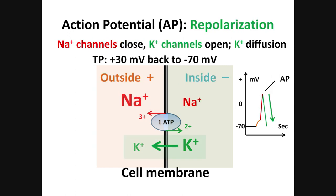When potassium channels open, where does the potassium go? It leaves the cell going from high level to low by diffusion — see the thick green arrow. As the positive ions leave the cell, the inside becomes less positive, which means more negative. As a result, the TP goes back from plus 30 to minus 70, which means that depolarization is completely reversed. This reversal of depolarization from positive to negative numbers is called repolarization.